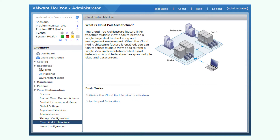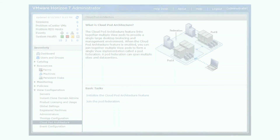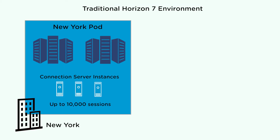In this video you'll learn how to use the CloudPod architecture feature to link together multiple Horizon 7 pods to provide a single large brokering and management environment. First let's look at a traditional Horizon 7 environment. A traditional Horizon 7 environment typically consists of a single pod in a LAN connected single data center environment. A single pod can support up to 10,000 sessions.